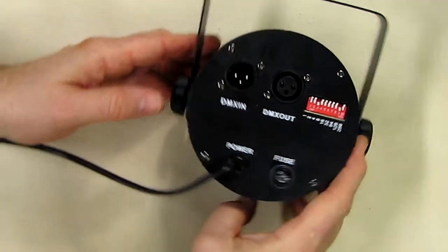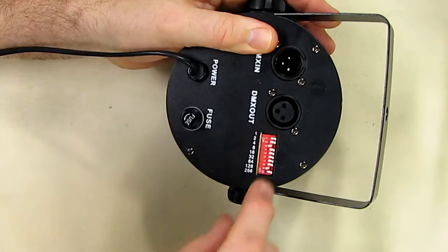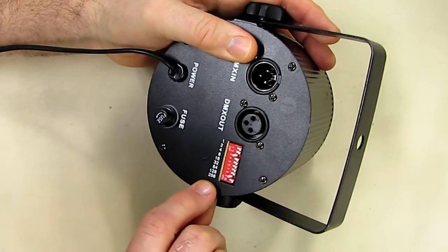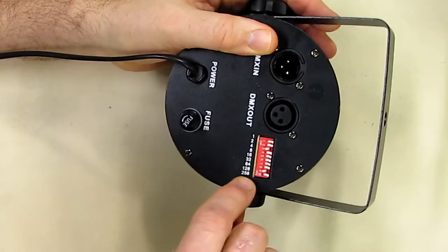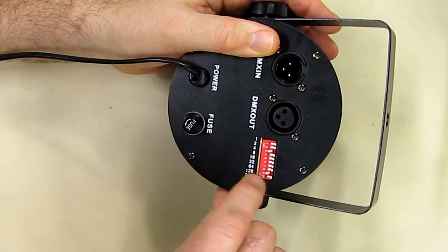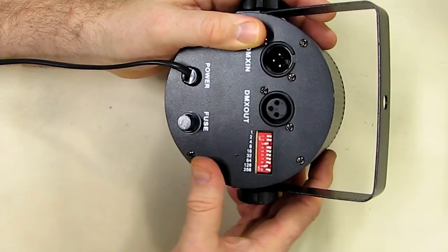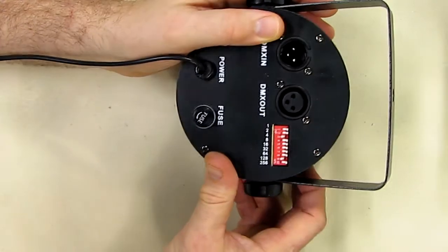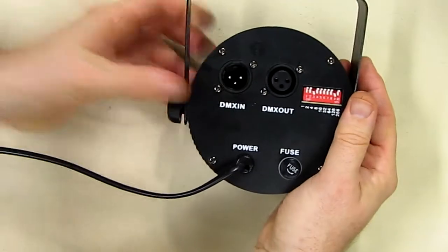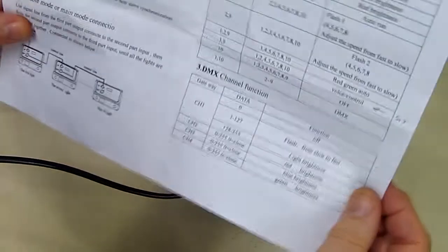And then here is the switch settings with one through 256, so it's showing the binary equivalent. And I think what I've got set, I've got three and nine in the downward position, and if I look on here...